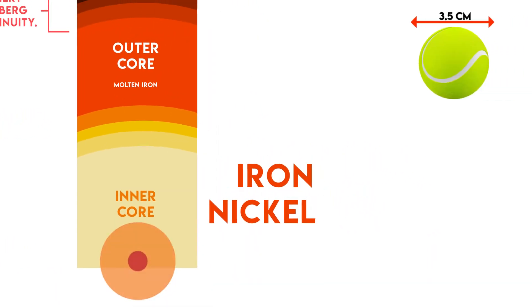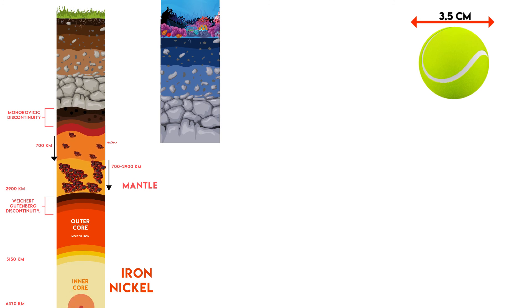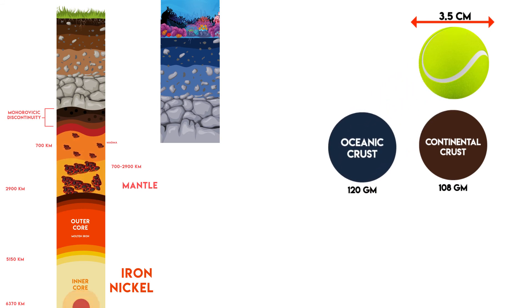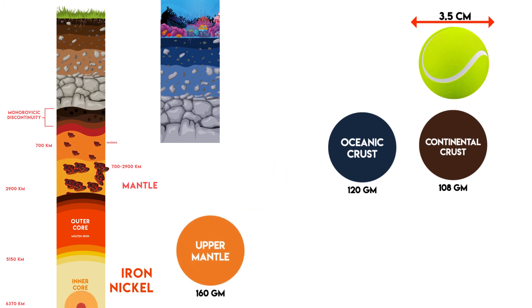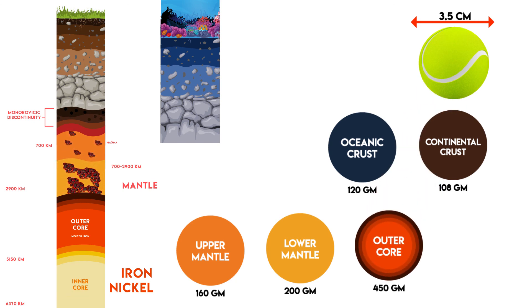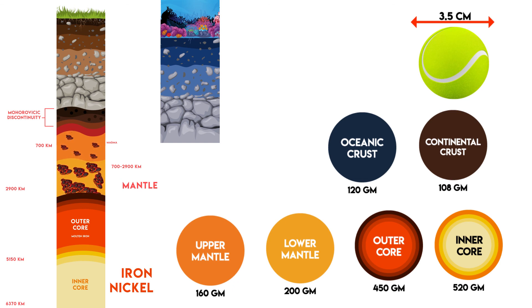You must have seen a tennis ball which has a diameter of around 3.5 cm. If we took material from all the layers and created a solid ball of the same size as a tennis ball, the weight of a ball made from continental crust would be 108 grams, whereas a ball made from oceanic crust material would be 120 grams. An upper mantle ball would be around 160 grams heavy, whereas a lower mantle ball would weigh around 200 grams. A ball made from outer core material would be about 450 grams heavy and an inner core ball would weigh around 520 grams. You can see that not only temperature and pressure, but density also increases as you move deeper and deeper, and is maximum at the center of earth.